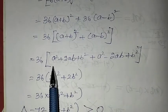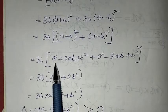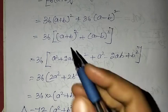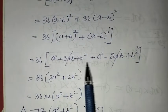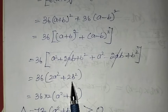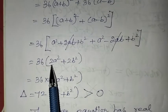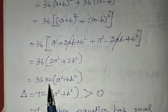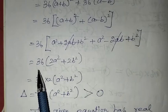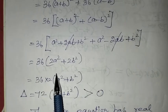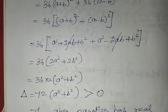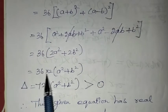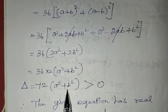Now we simplify. a square plus a square is 2a square. Plus 2ab minus 2ab cancel each other. b square plus b square is 2b square. Taking 2 common, we get 36 into 2, which is 72, into (a square plus b square).